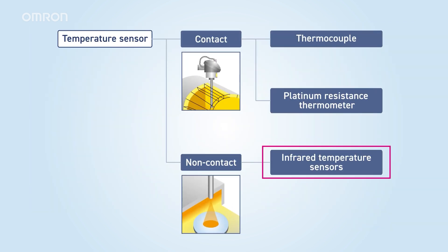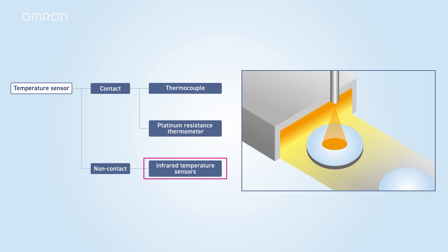Lastly, let's explain infrared temperature sensors. These sensors estimate temperature by measuring the infrared radiation emitted by an object. They are used for measuring the temperature of moving objects, or objects whose quality may change upon contact, such as semiconductors and food. However, accuracy may decrease when measuring metals with low emissivity. Click here for the details about our infrared temperature sensors.